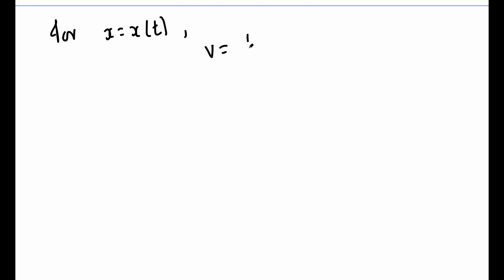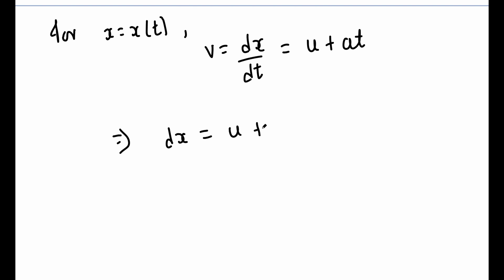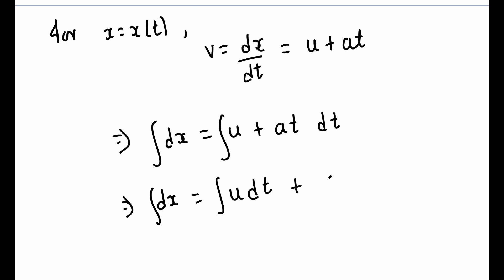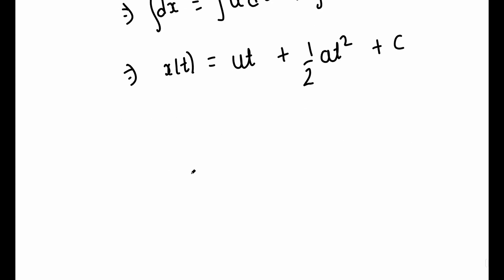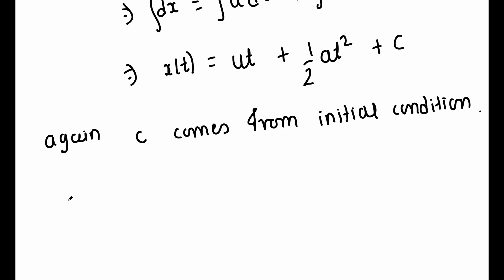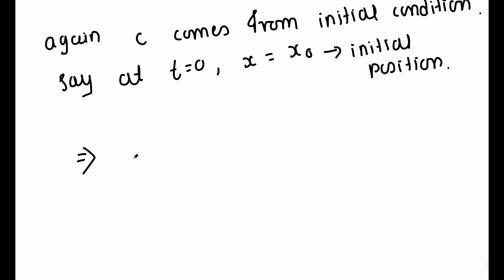We can go on to derive the equation for the variation of position with time. Since v = dx/dt and from our previous equation v = u + A·t, we get dx/dt = u + A·t. Integrating both sides, we get x(t) = u·t + ½A·t² + C. This constant is again determined by the initial condition: at t = 0, x = x0. This gives us the final equation x(t) = x0 + u·t + ½A·t².